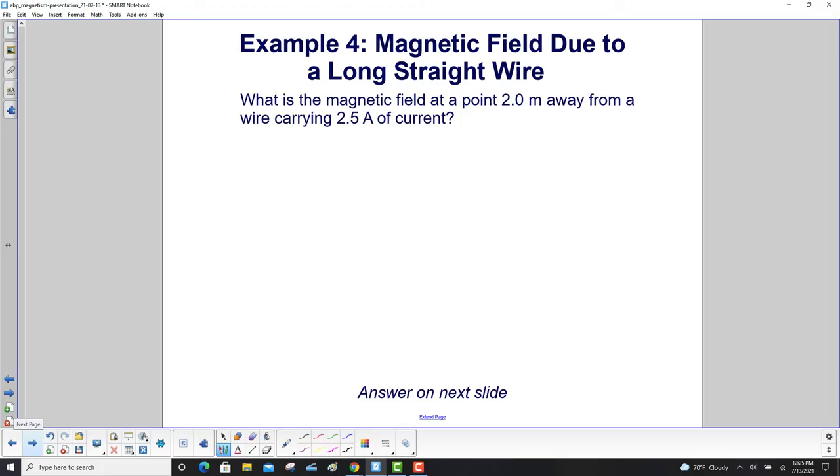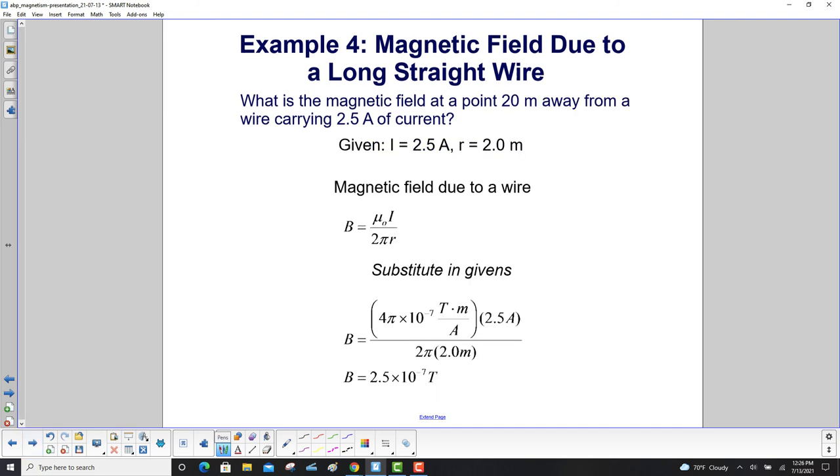What is the magnetic field at a point two meters away from a wire carrying two and a half amps of current? We list our givens. Here's the current, here's the distance away from the current-carrying wire. We have our formula for the magnetic field. We substitute in our givens. We can notice that this 2π cancels with this 4π and leaves you with a 2. This 2 cancels here. So we're actually just left with 2.5 × 10⁻⁷ Tesla. Don't reach for the calculator right away. See if you can cancel out some easy numbers. All we're left with is this 2.5 and this 10⁻⁷.